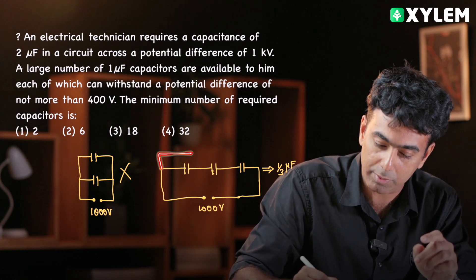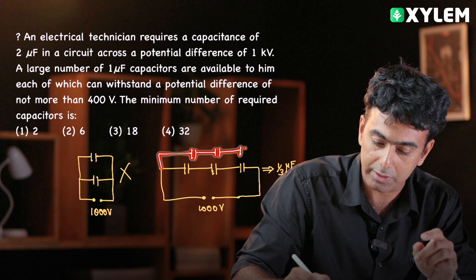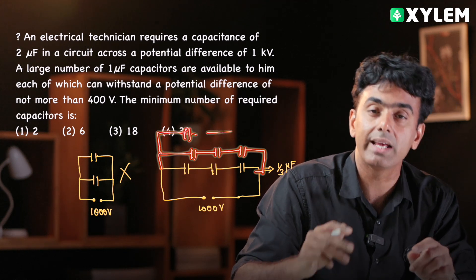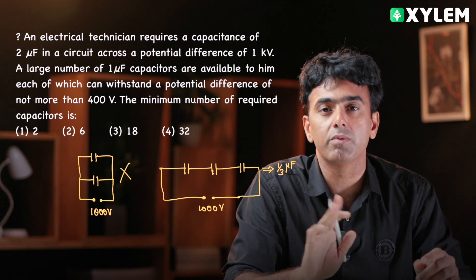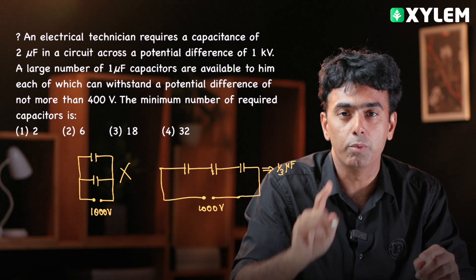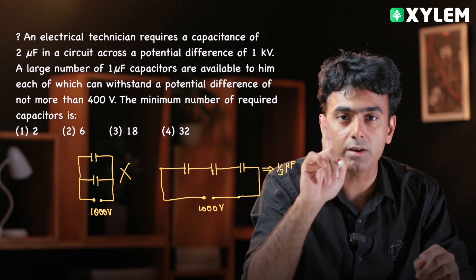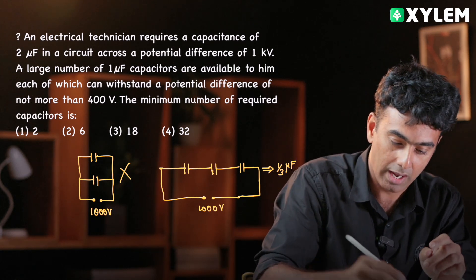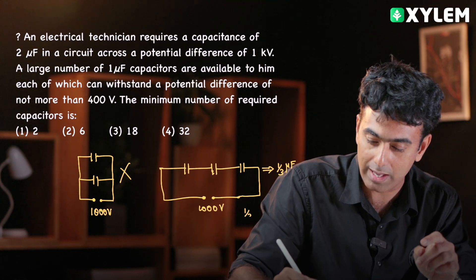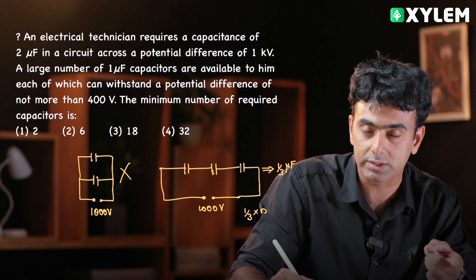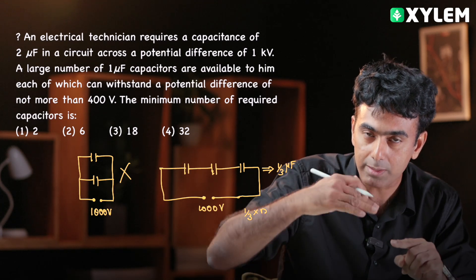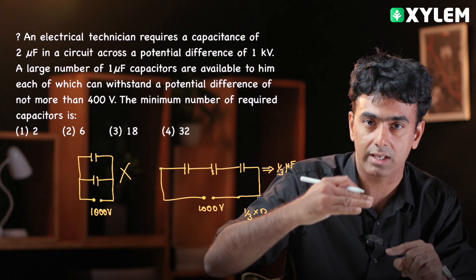Now we need 2μF total, but one row gives only 1/3 microfarad. We can connect more rows in parallel. The effective capacitance equals 1/3 multiplied by the number of rows, because one row in parallel adds 1/3 microfarad each time.